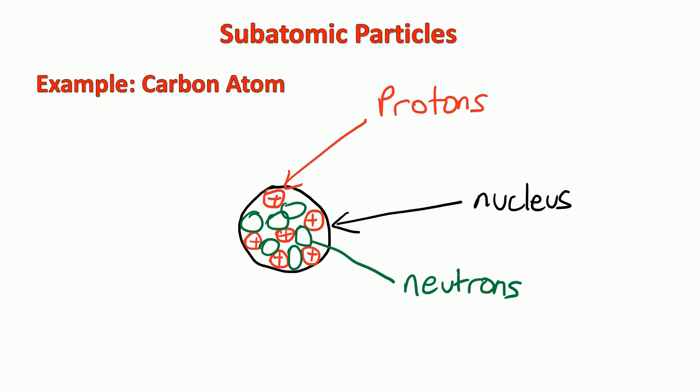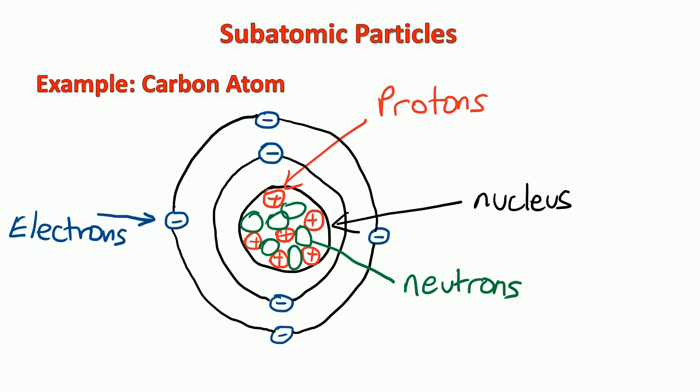And then around the outside of the atom on shells or orbits, we've got electrons. Think about electrons orbiting the nucleus like planets orbiting around the sun. These are often called electron shells. You also see them referred to as energy levels.